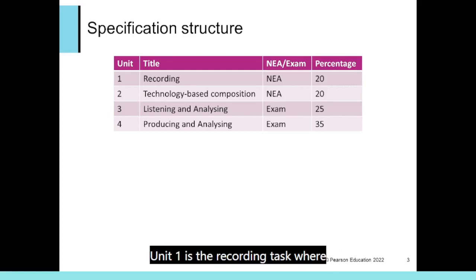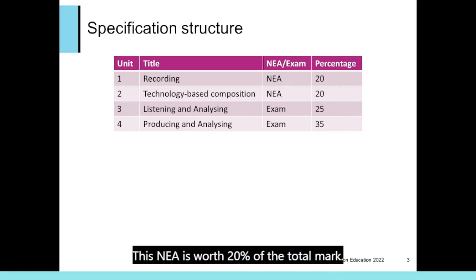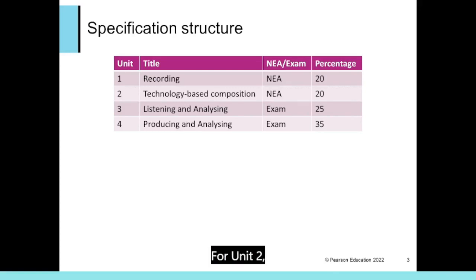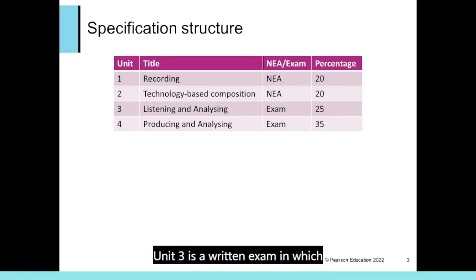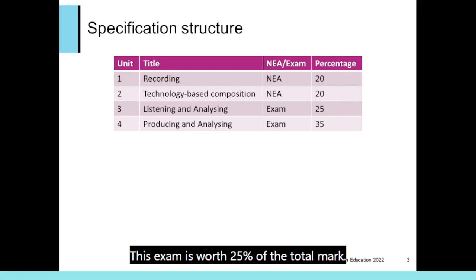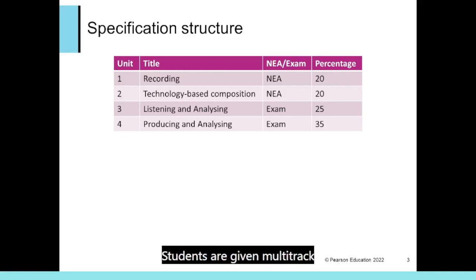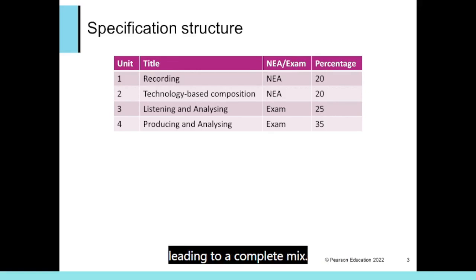Unit 1 is the recording task where students record a song played by real instruments. This NEA is worth 20% of the total mark. For Unit 2, students create a composition where the use of music technology is central, also worth 20%. Unit 3 is a written exam where students answer questions about recordings they listen to during the exam, worth 25%. Unit 4 is a written and practical exam where students are given multi-track files as the basis of written questions and practical tasks leading to a complete mix, worth 35%.